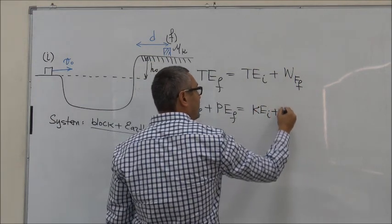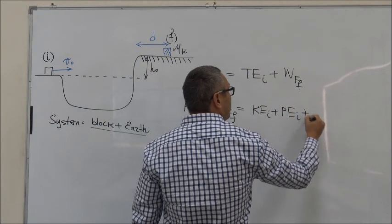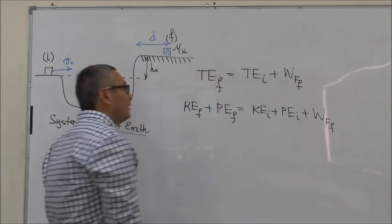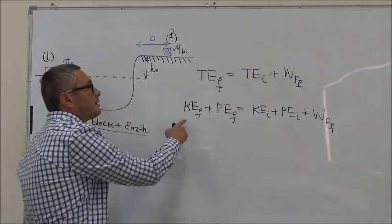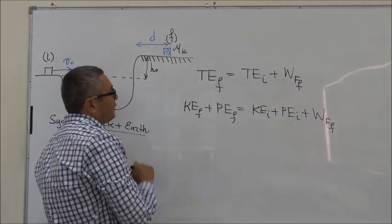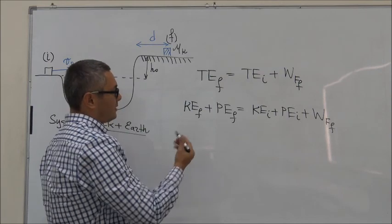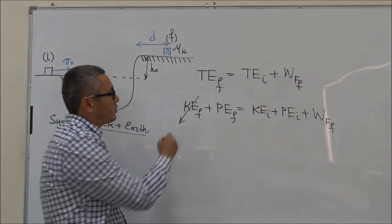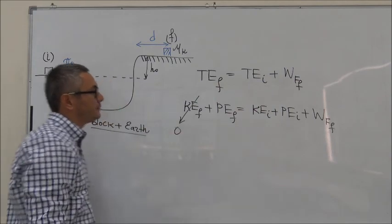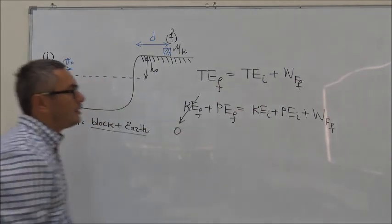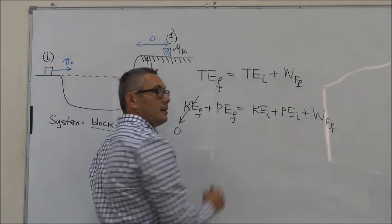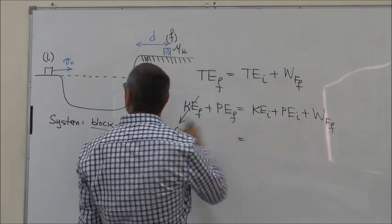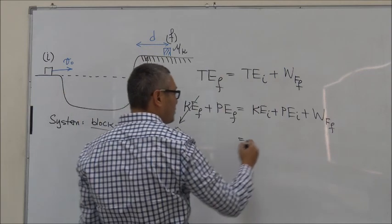Plus the work done by the force of friction. In the final state, the block comes to rest, which means that it has no velocity, and therefore kinetic energy happens to be zero. In the initial state, kinetic energy of the system is equal to mV0 squared over 2.